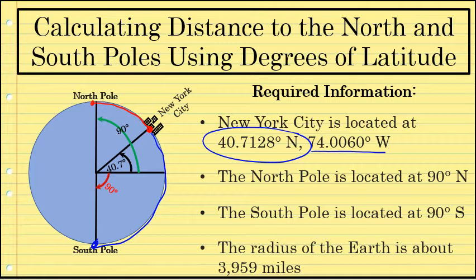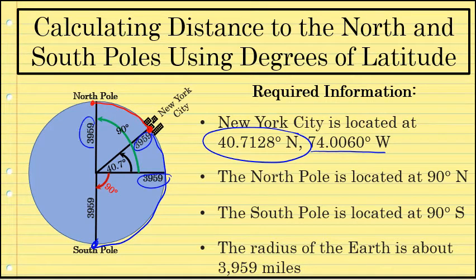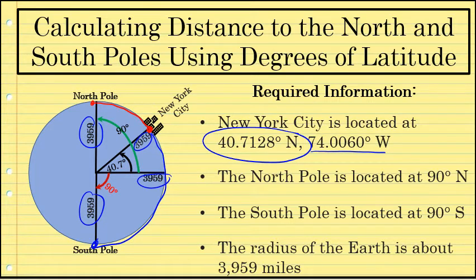There's one more piece of information we'll need, and that's the radius of the Earth. The radius of the Earth is about 3,959 miles. And in the diagram that I have on the screen, that shows up in four different locations. Using this information, we'll be able to calculate the distance from New York City to the North Pole and New York City to the South Pole.